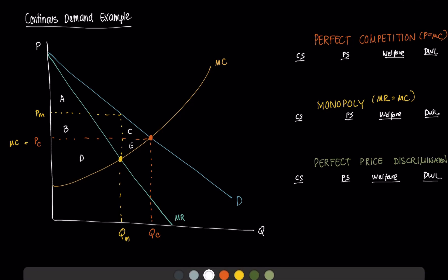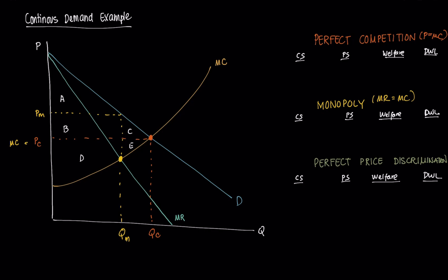Under perfect competition, the consumer surplus is the entire triangle A plus B plus C. There is consumer surplus because people willing to pay higher amounts end up paying only the competitive market price. The producer surplus, which represents profit, is D plus E. Total welfare is A plus B plus C plus D plus E, and since we're under perfect competition, there is no deadweight loss.